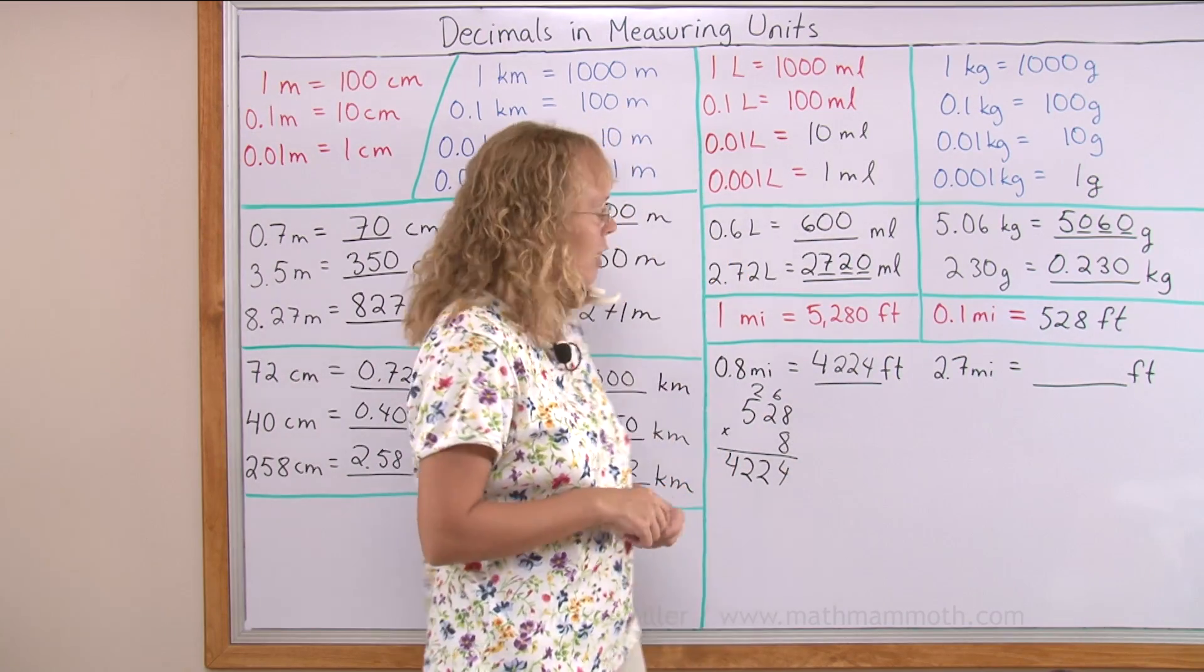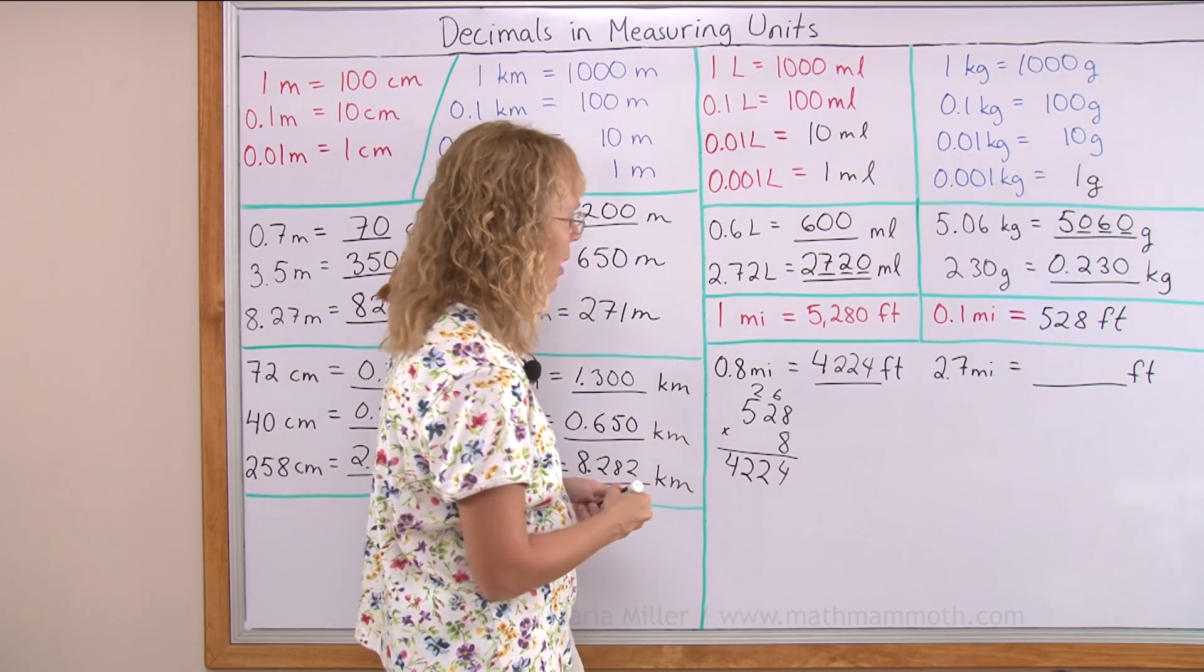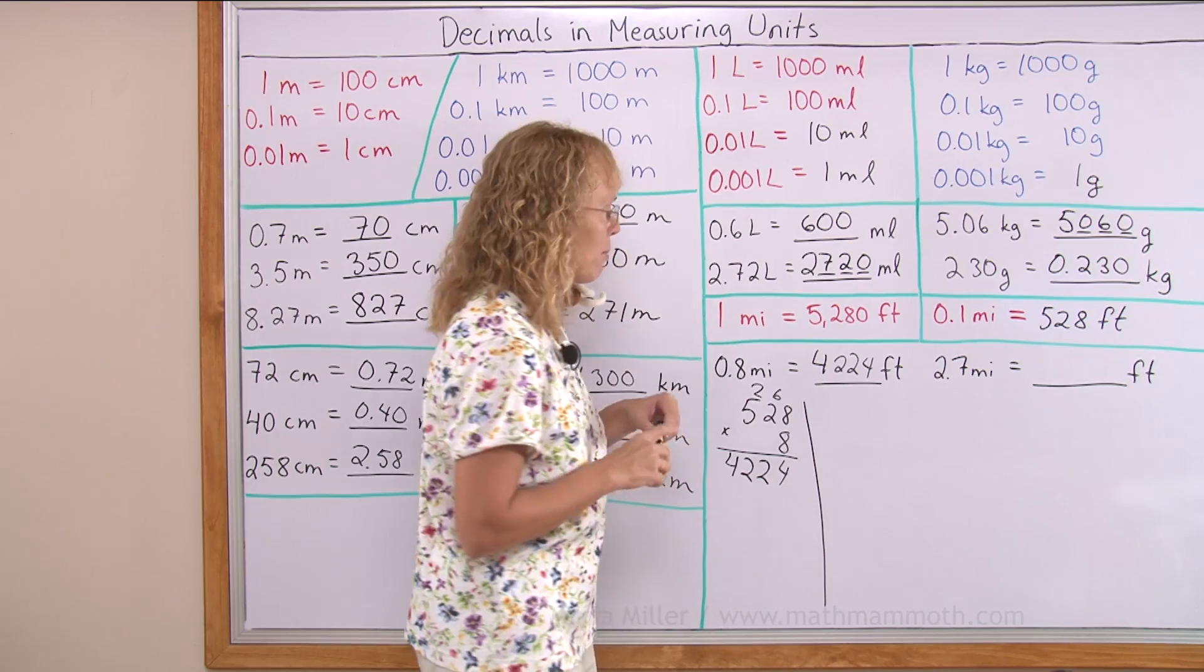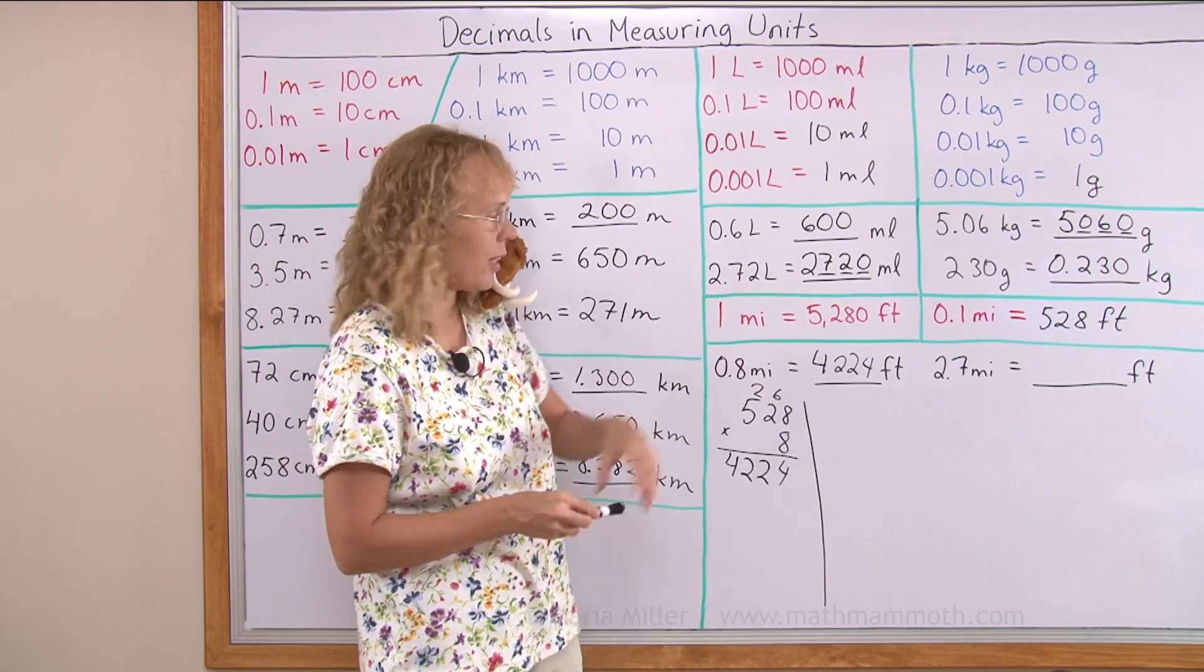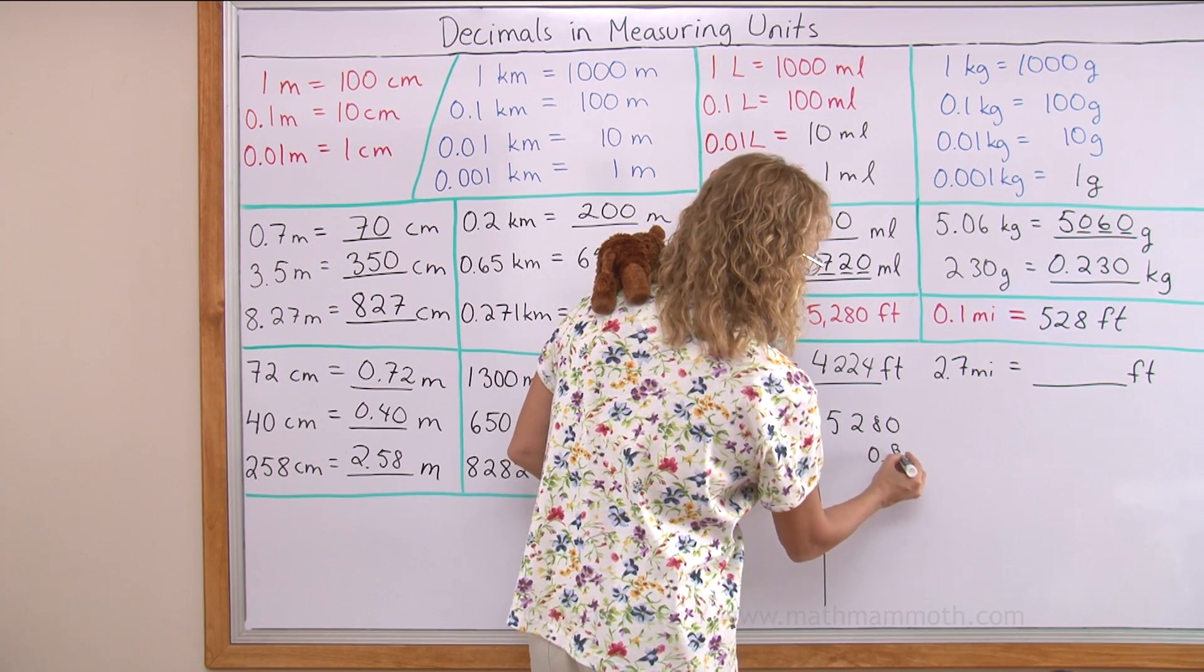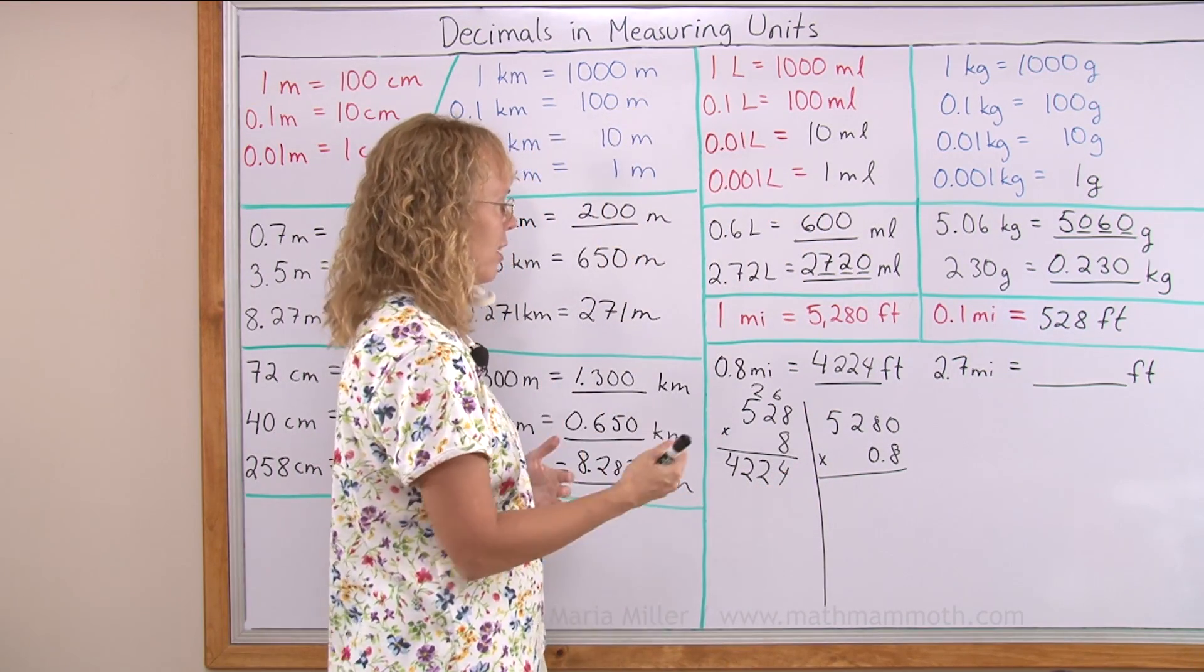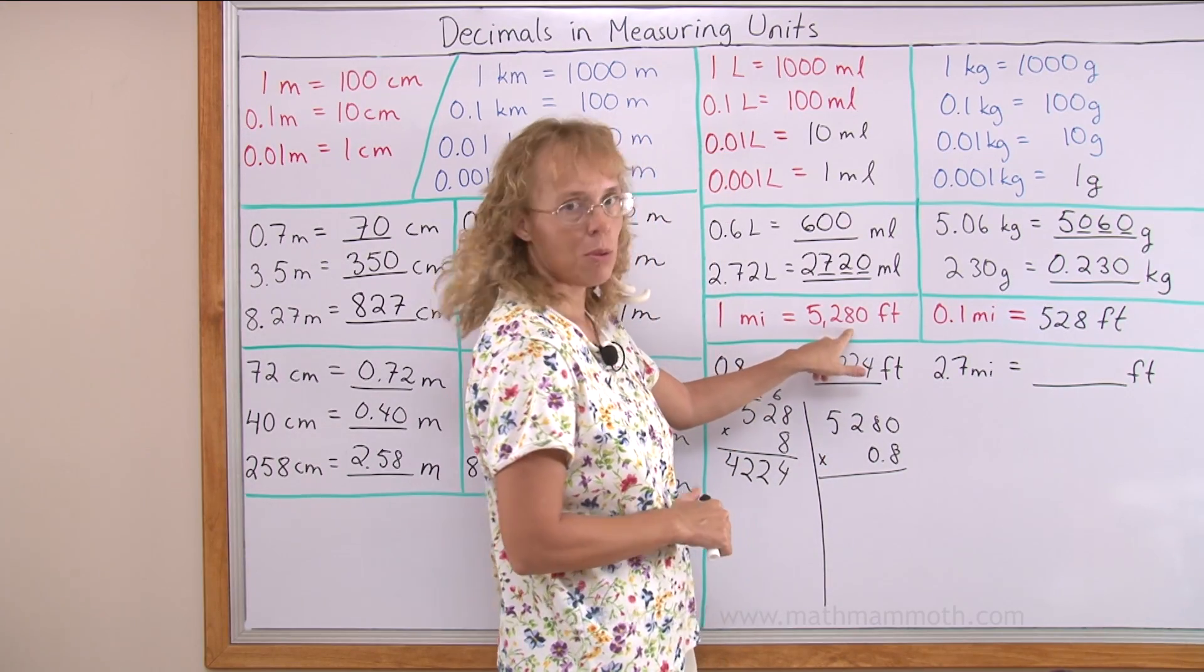I want to show you the way that most people would use when multiplying this type of a problem. Most people would actually multiply 0.8 times this number here. So it would look like this.